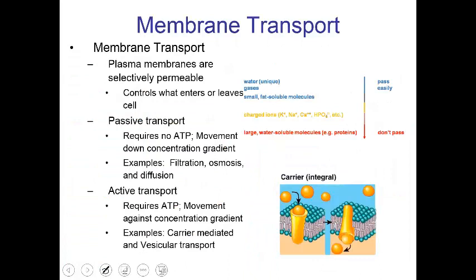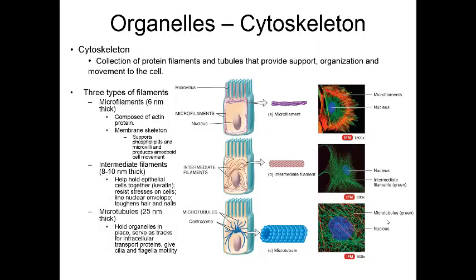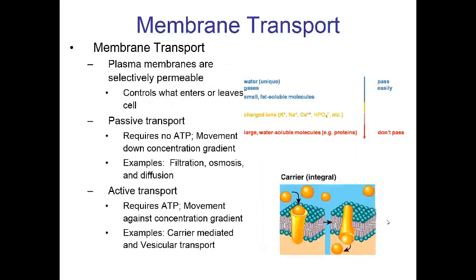Moving on to membrane transport. Membrane transport can be classified based on whether it requires ATP or happens without ATP. Transport that does not require ATP is called passive transport, versus one that does require ATP — adenosine triphosphate — called active transport. Types of passive transport are diffusion and osmosis. Diffusion is the transport of nutrients from an area of high concentration to an area of low concentration. The key term here is nutrients.